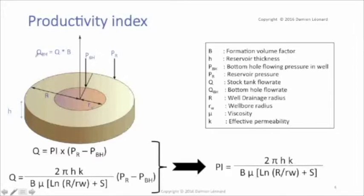We've got the formula written there: QBH, the bottom-hole flow rate, which equals Q times B, stock tank flow rate times the formation volume factor.